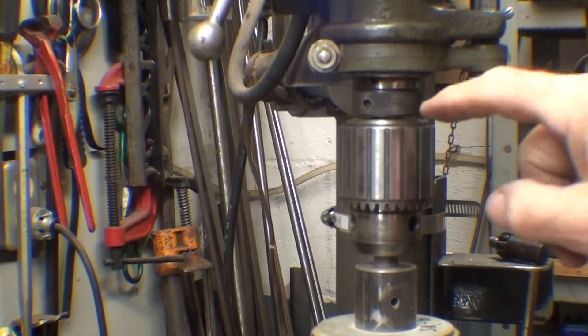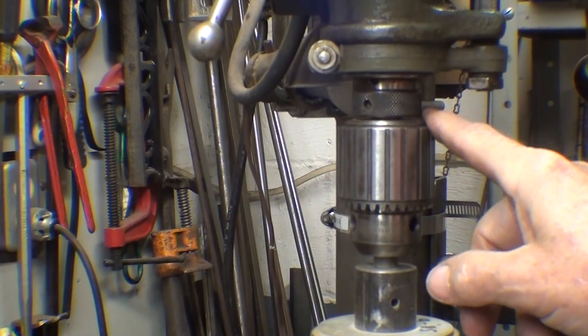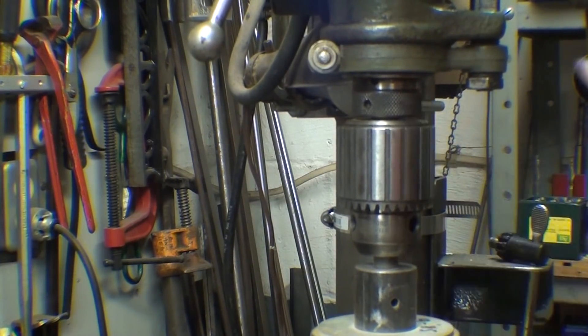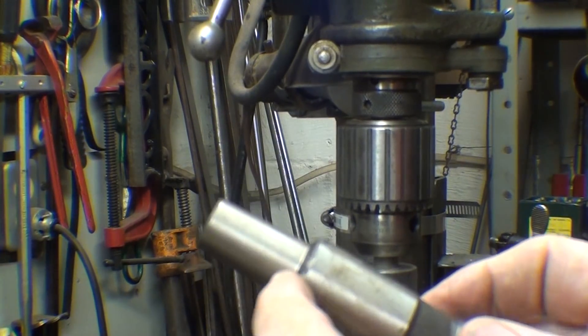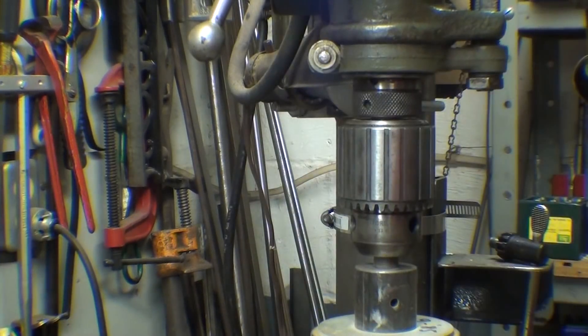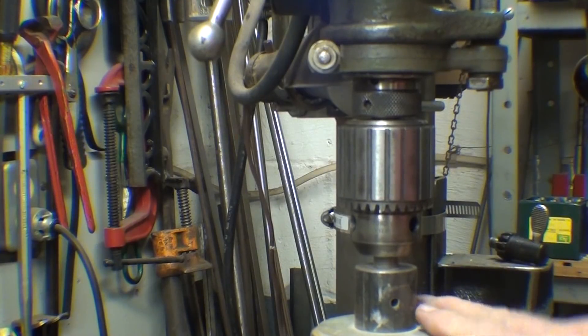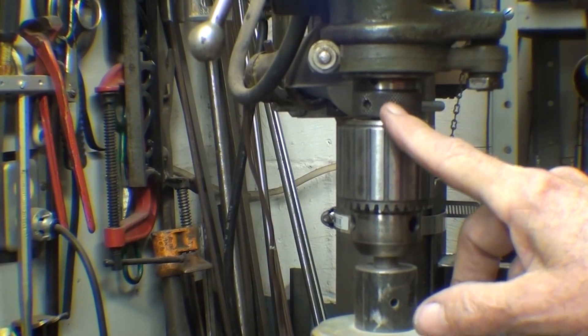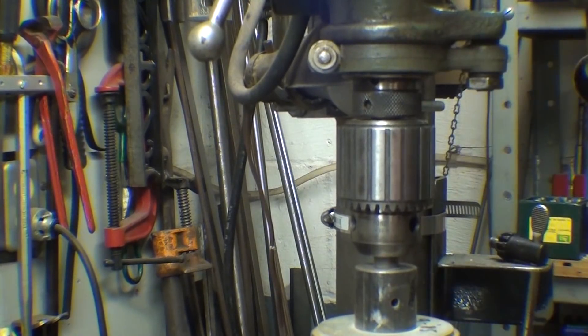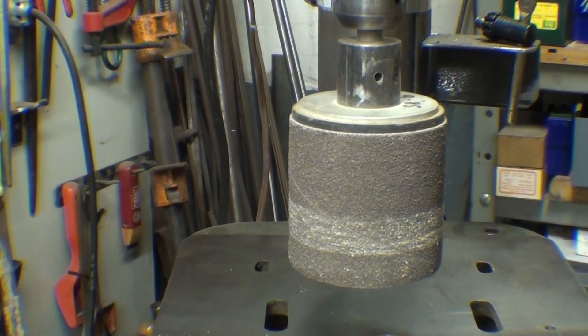My drill presses all have a different type of collar. For instance, this one is knurled with some holes in it, but deep within the bowels of this spindle, and you can't see it, resides a number 33 Jacobs taper. The reason for the collar is that if you put any sideways pressure on a Jacobs chuck, you can knock it loose and it'll fall out. So the collar, the threaded collar, retains the taper up into its female part.